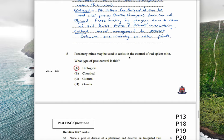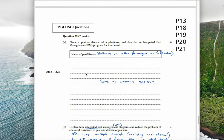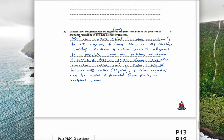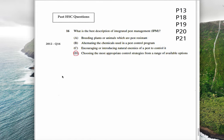Predatory mites may be used to control red spider mite. What type of pest control is it? It's biological because you're using something else that's living. This one is exactly the same as this one here. And then explain how IPM programs can reduce the problem of chemical resistance. IPM uses multiple methods, including non-chemical, to kill organisms and hence slow or stop resistance buildup. As there is natural variation of genes in a population, some show resistance to chemical and survive and pass on genes. Therefore, using other non-chemical methods such as pupae busting of bollworm with cotton physical, resistant organisms can be killed and prevented from passing on resistant genes. The last one is what is the best description of IPM? This is only one method, this is only one method, this is only one method, and this one talks about multiple strategies. The key letter there is strategies with an S. That is why that is IPM.